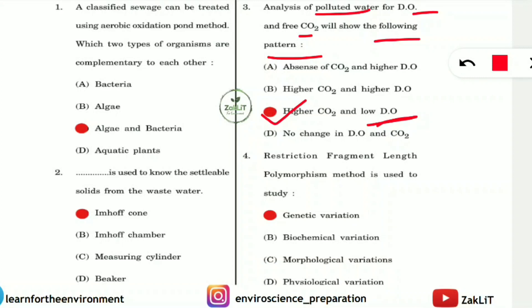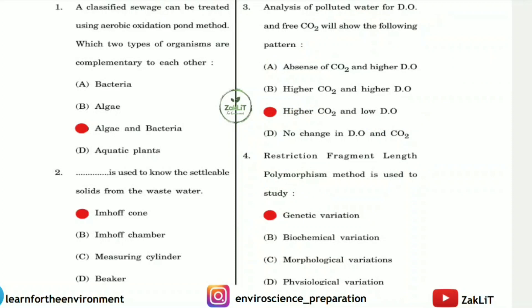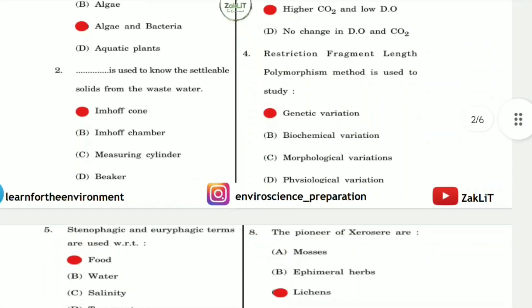Question 4: The restriction fragment length polymorphism (RFLP) method is used to study genetic variation between species. This comes from the genetics portion of the UGC NET Environmental Science syllabus, which is not always clearly mentioned but questions do appear from it.